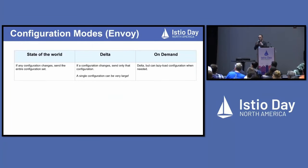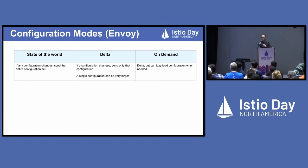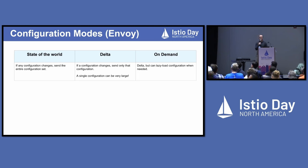Scalability is not just about how much configuration there is. Configuration is always changing — pods are scaling up and down, you're changing your virtual services to do a canary rollout, things like this. So it's also about how we're pushing those updates to the proxies, because any pod scaling up or down may potentially need to send out an update to every other pod in the entire mesh, which for many people here is 10,000 proxies or more. It's really important that the updates are efficient.